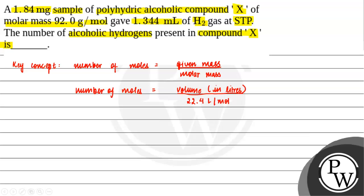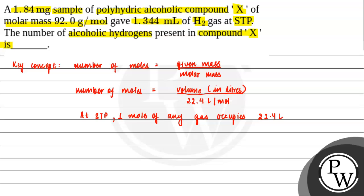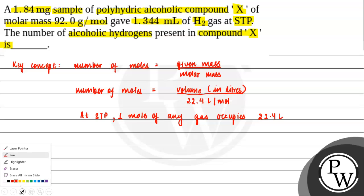If you are wondering what is 22.4 liters per mole — at STP, which is our standard temperature and pressure, one mole of any gas occupies 22.4 liters. So, let us now start solving this question.